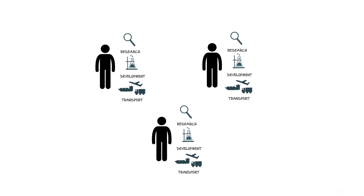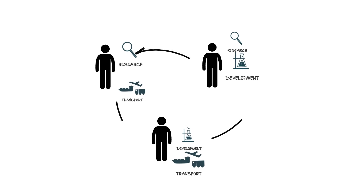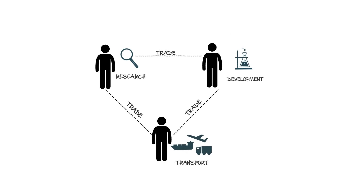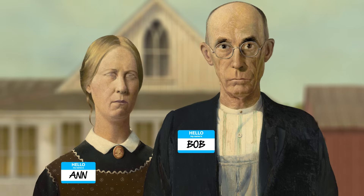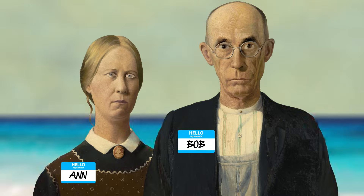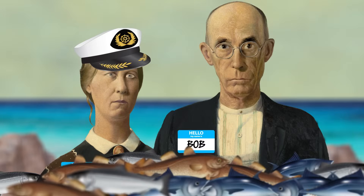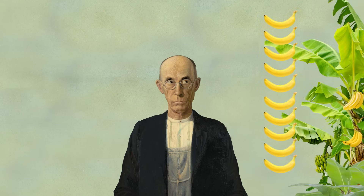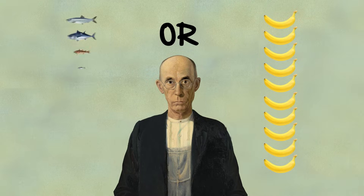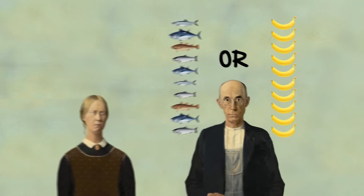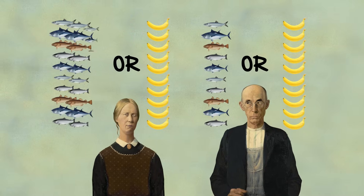Economists use the concept of opportunity cost to determine if people can benefit from trading with one another. Let's look at a simple example: just two people, Bob and Ann, who produce just two goods, bananas and fish. Here's what they can each do if they spend all of their time producing only one good. Bob can either gather 10 bananas or catch 10 fish, and Ann can either gather 10 bananas or catch 30 fish.